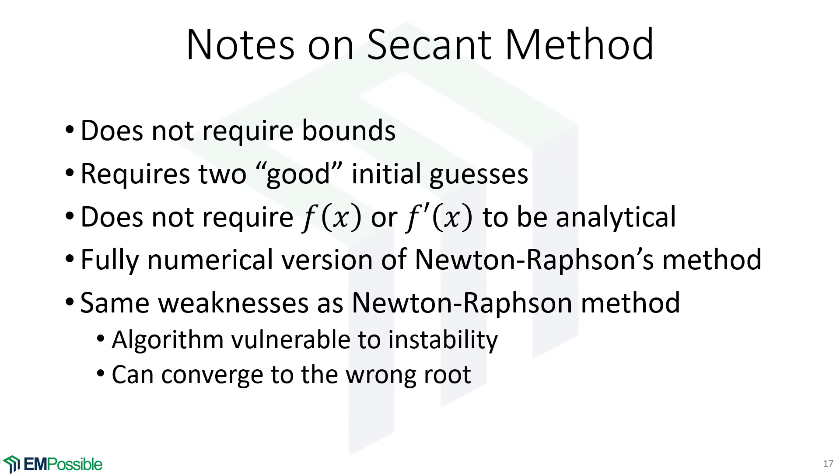I like to think of this as a fully numerical version of the Newton-Raphson method. But because of that, it has some of the same weaknesses that we looked at with the Newton-Raphson method. One is it's vulnerable to instability. And it can not converge at all.